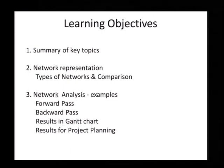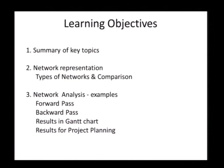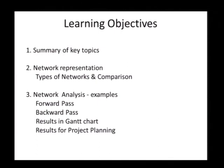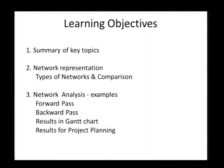What I would like to cover here is: first, since this is lecture 6 and we have covered quite a few topics so far, I would like to summarize those topics. Then we will get into network representations, look at types of networks and comparisons, and then get into the analysis side — covering the forward pass, the backward pass, expressing results in a Gantt chart, and how these results can be used in project planning.